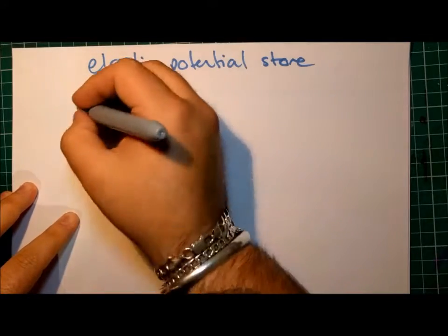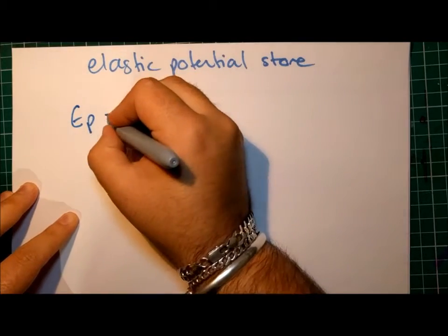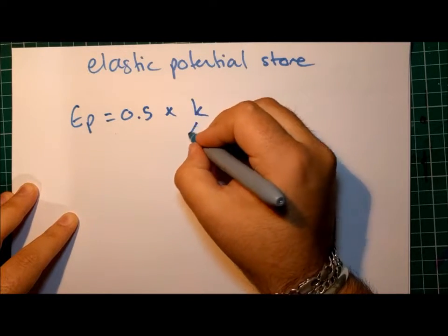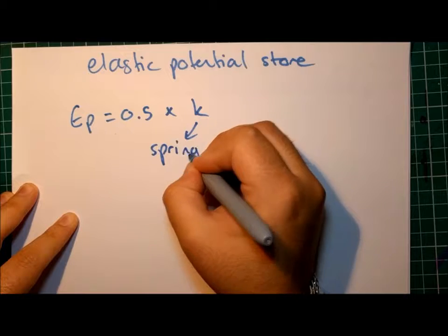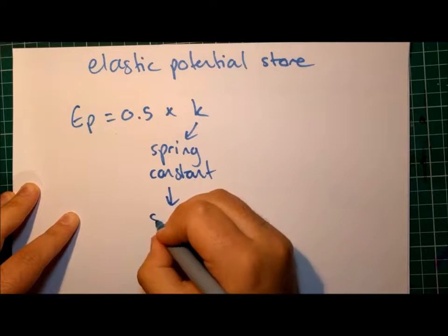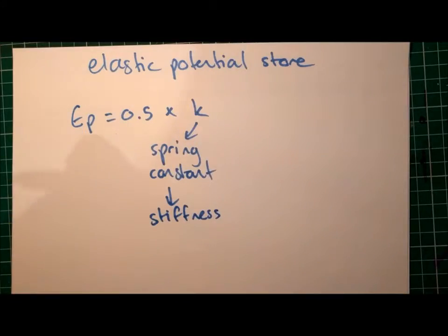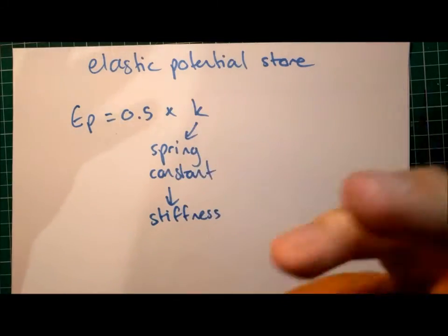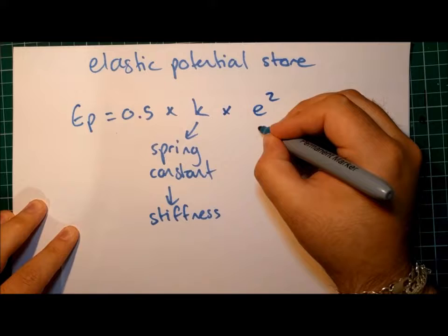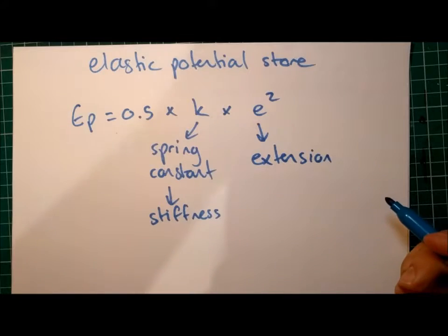And the equation for that is quite simple. You've got the Elastic Potential Energy equals half times the spring constant, which is also known as the stiffness. I find it easier to think of k as how stiff an object is, rather than spring constant. Half times spring constant times the extension squared. And the extension is how much longer the object gets when it is stretched.